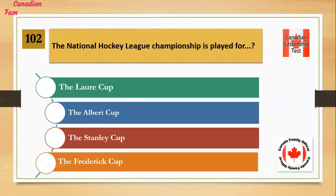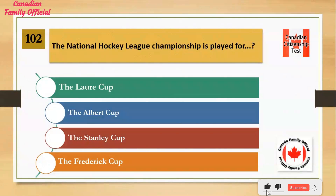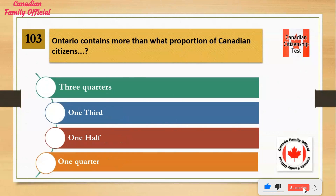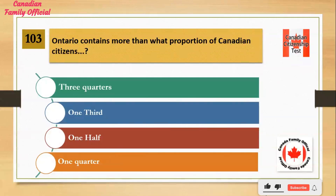The National Hockey League Championship is played for: Number 1: the Lohr Cup. Number 2: the Albert Cup. Number 3: the Stanley Cup. Number 4: the Frederick Cup. And the answer is the Stanley Cup.